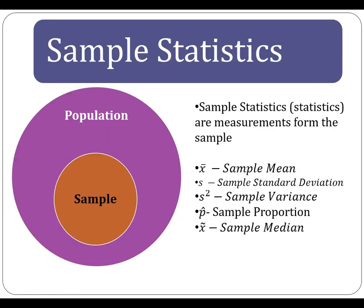One of the first things we have to understand is this idea of a sample versus a population. A sample is a randomly selected group that comes from the population — in other words, a sample is a subset from the population. When we talk about a sample statistic, sometimes we just refer to these as a statistic, and these are measurements from the sample. Typically, we use English letters to represent those. On this slide, you can see x-bar represents the sample mean, s represents the sample standard deviation, and s-squared represents the sample variance.